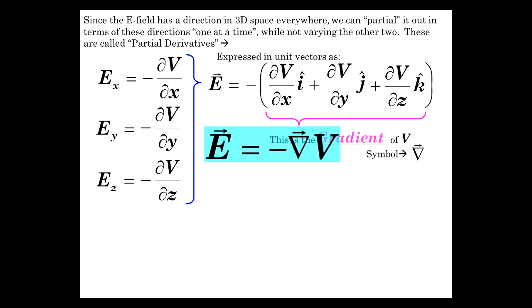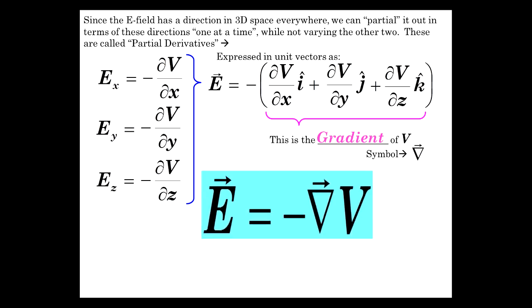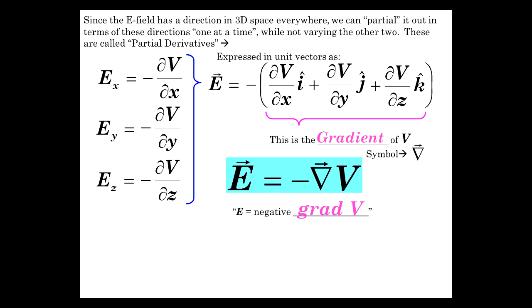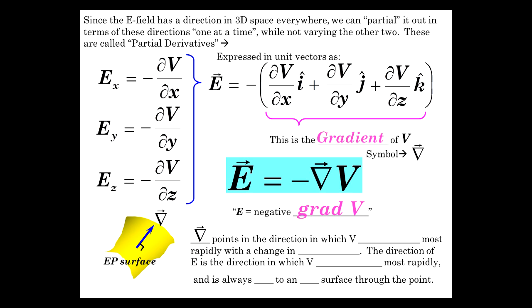Here's an equipotential surface, and we look at it perpendicular to that surface. That's the direction of the gradient. The gradient points in the direction in which V increases most rapidly with a change in position. It's the most rapid change in the potential, which has something to say about the electric field. The direction of the electric field is in the direction in which V decreases most rapidly. Because if you go in the direction of an electric field, the potential goes down.